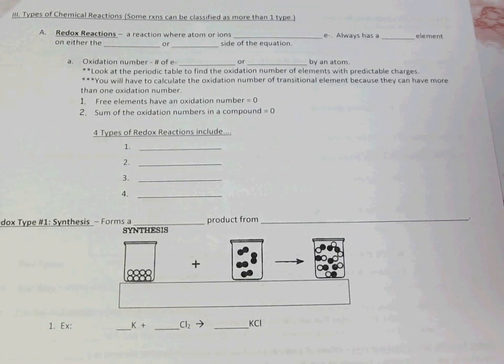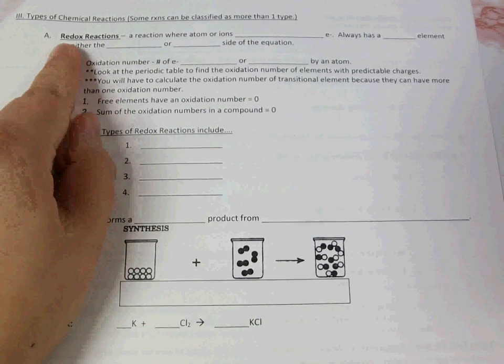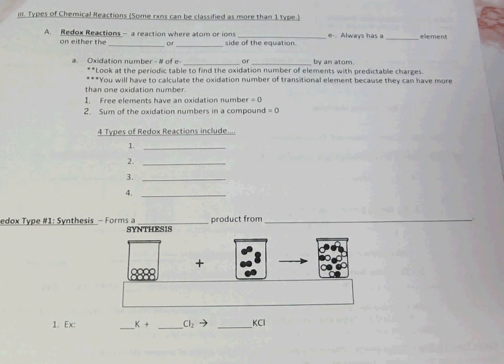The second part of this unit is classifying reactions based on what type they are. The first type of reaction we're going to learn is redox reaction, which is really a blanket term for a whole bunch of different reactions.